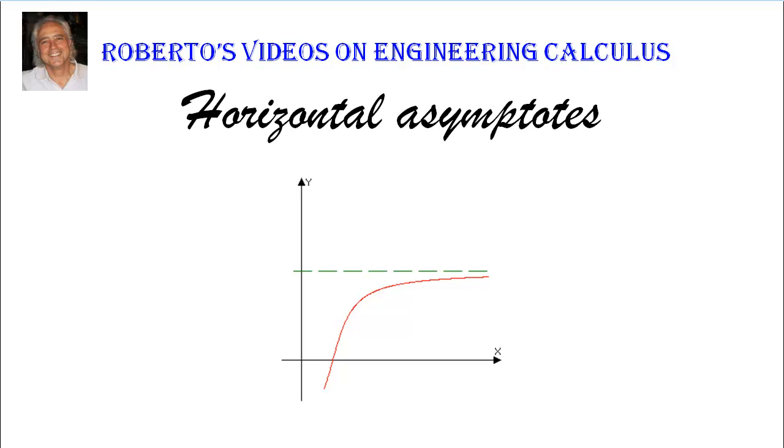So horizontal asymptotes, of course, are going to be very similar to vertical asymptotes in many respects, but also a little bit different. What you have in front of you probably recognize already as one visual illustration of a horizontal asymptote, but we want to look a little bit more in detail and more deeply.